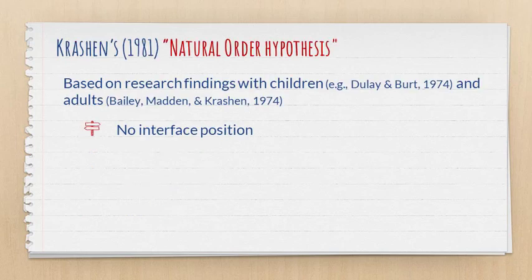There are a couple of hypotheses connected to these developmental sequences. The first one is Krashen's natural order hypothesis, which is based on research done in the 70s with both adults and children acquiring English. The natural order hypothesis says that the acquisition of language features follows a certain path regardless of the first language and regardless of instruction.